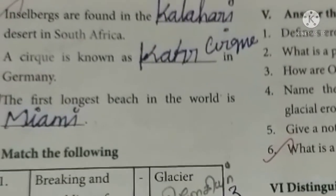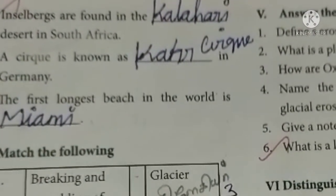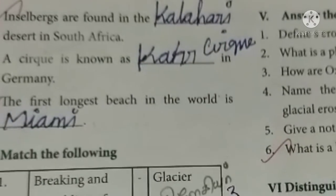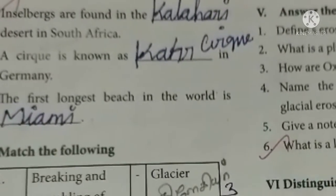Then fifth one, the first longest beach in the world is dash. Marina, M-A-R-I-N-A, Marina.